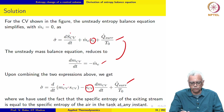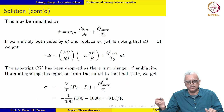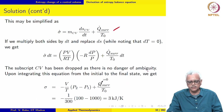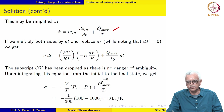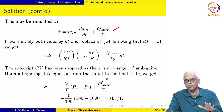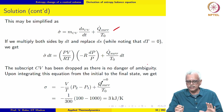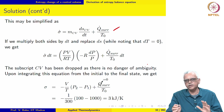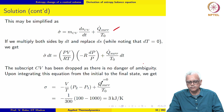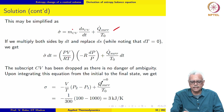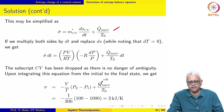Using the product rule to expand and simplify, we note that Q dot is zero because the vessel is insulated — only electrical work crosses the system boundary, so there is no heat interaction between the control volume and the surroundings. We then use the ideal gas equation of state to replace the relevant terms.